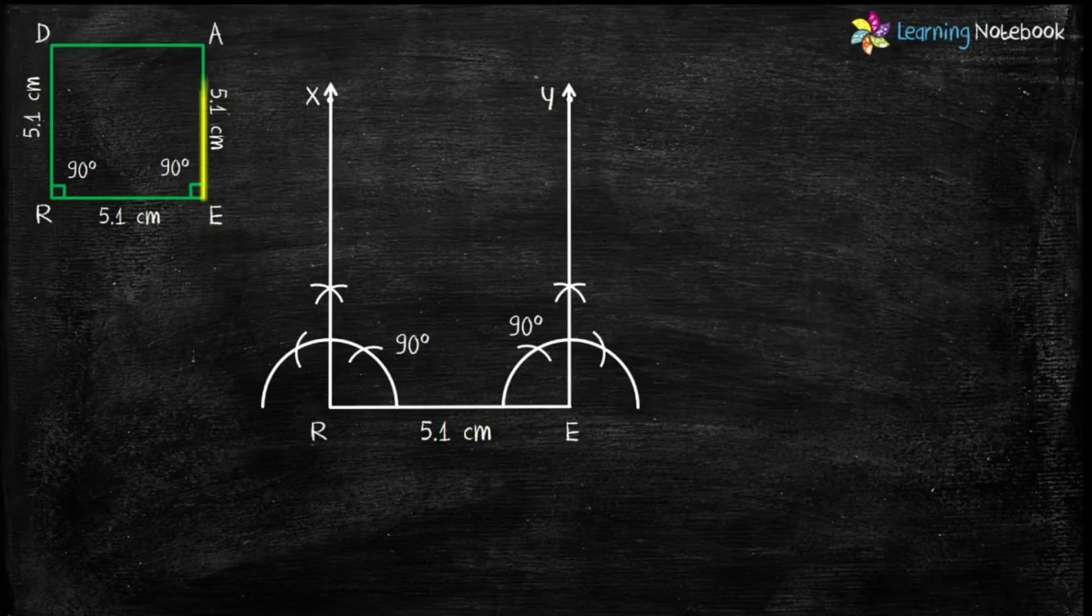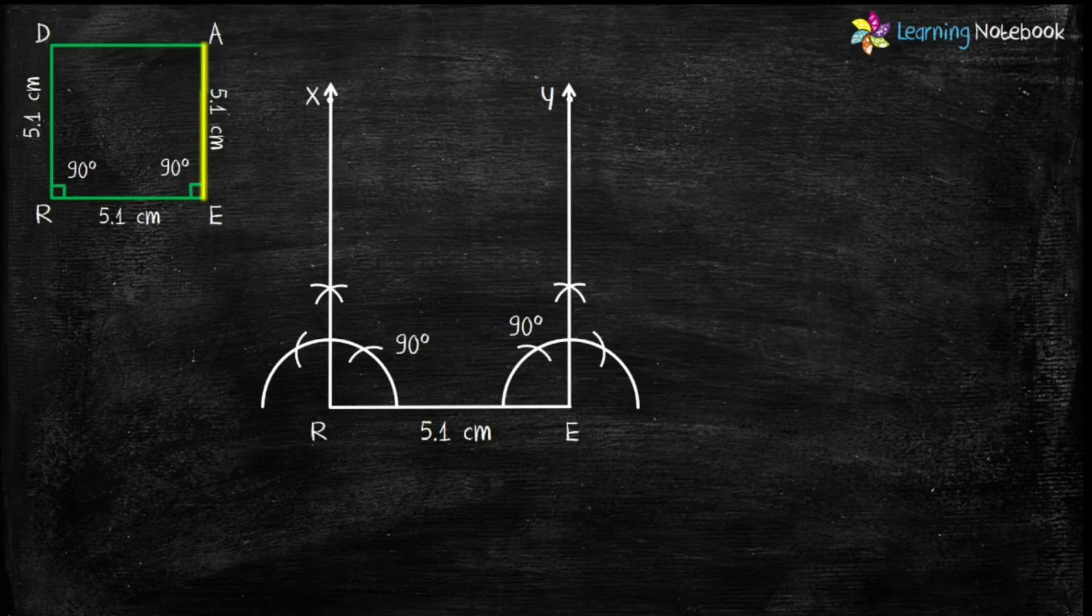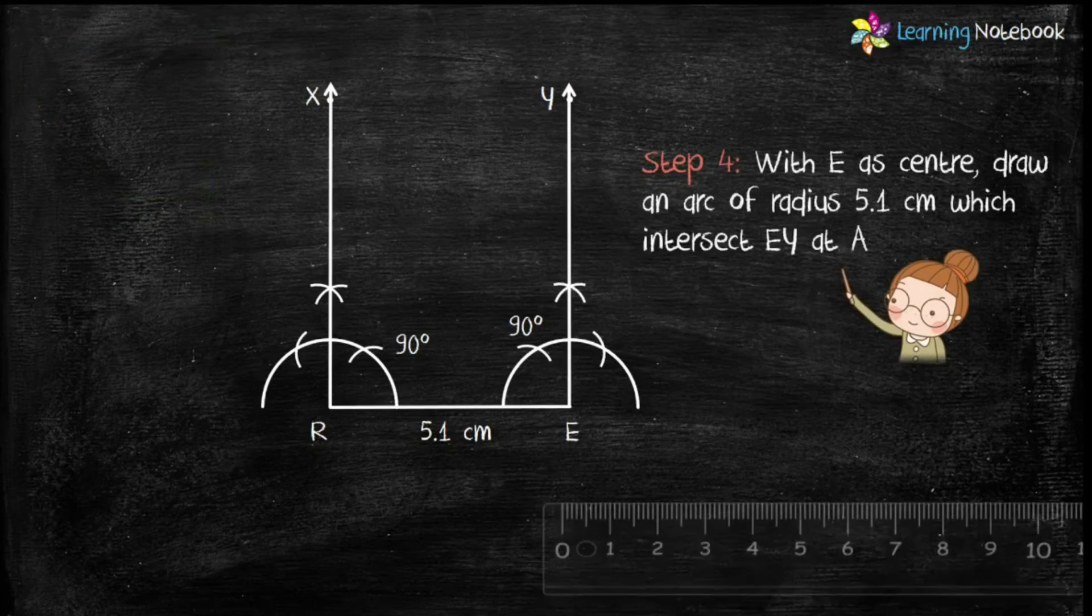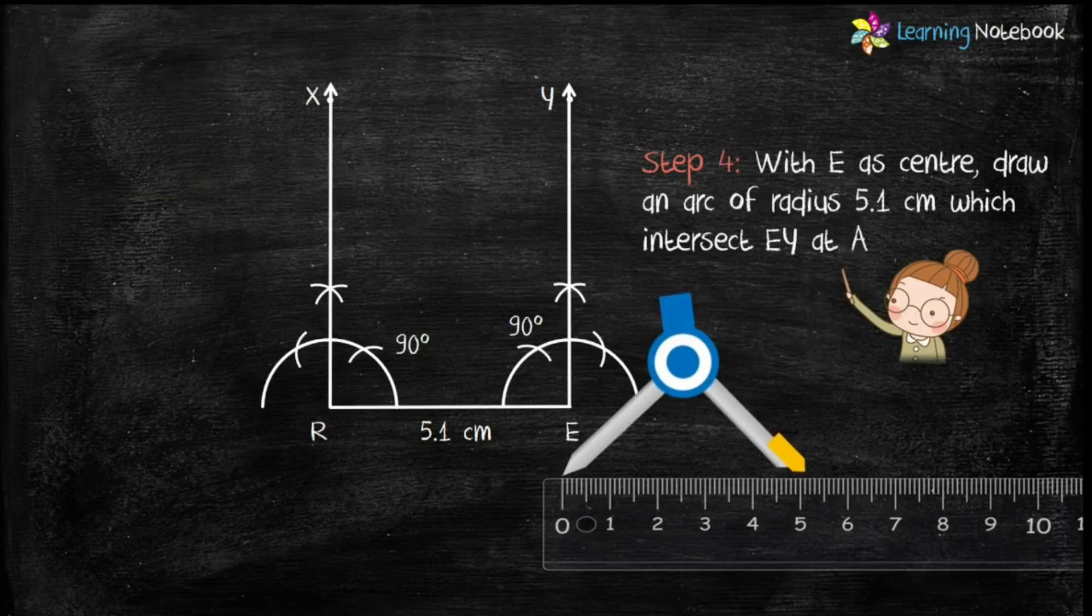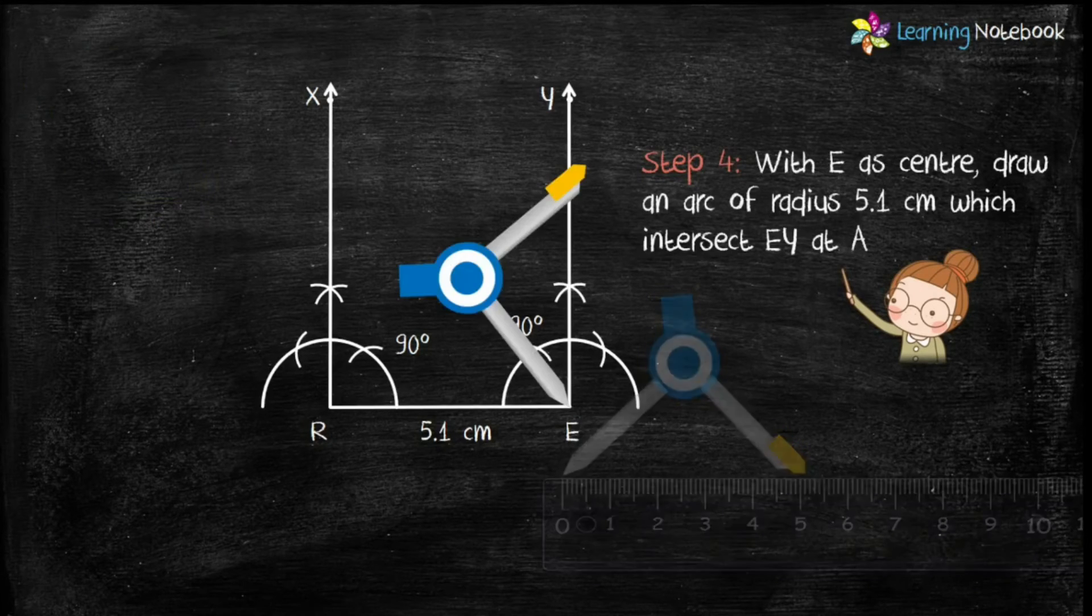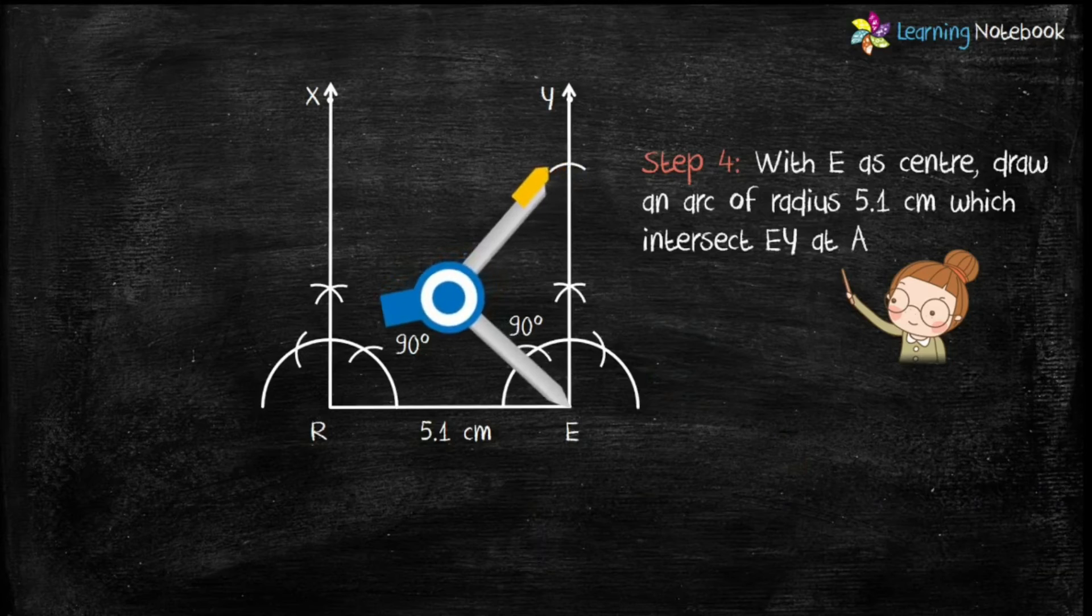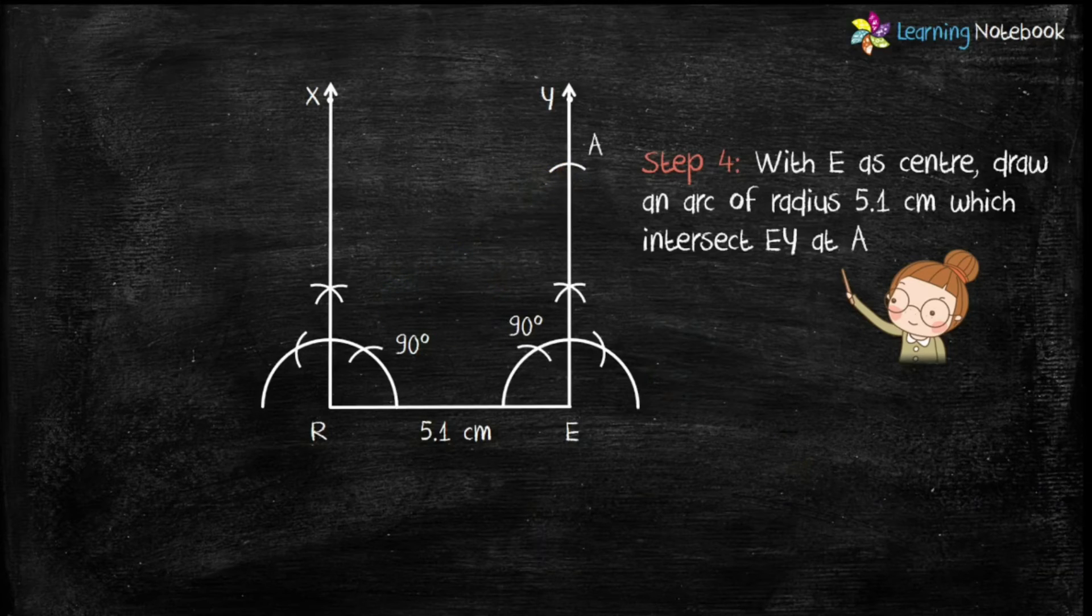In step 4, let's draw side EA which is given as 5.1 cm. For this, open the compass with radius 5.1 cm and with E as center, draw an arc to intersect RE at point A.